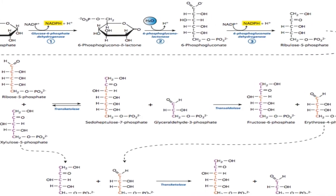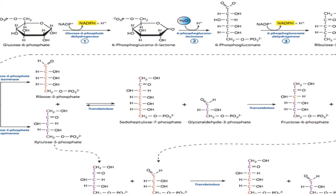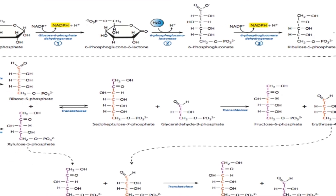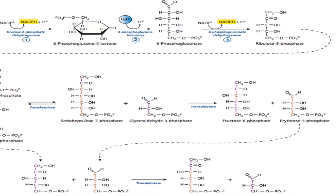Then 6-phosphogluconolactone — here only a water molecule is required, hydrogen is released, and the ketone is converted to an ester. The 6-phosphogluconolactone is converted to 6-phosphogluconate. In 6-phosphogluconate, one carbon atom is reduced by the 6-phosphate group. Then that ester is removed and it is converted to ribulose 5-phosphate.